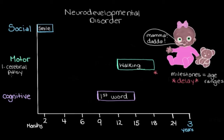I won't talk about the causes of these disorders in this video — that gets a little complicated for now. I just want to focus on laying out the groundwork for thinking about neurodevelopmental disorders. Sticking with our motor milestones, another disorder where we'd see some motor issues is Tourette's syndrome. For someone with Tourette's, the main signs we see are these unusual, repetitive movements or sounds, like blinking or grunting.